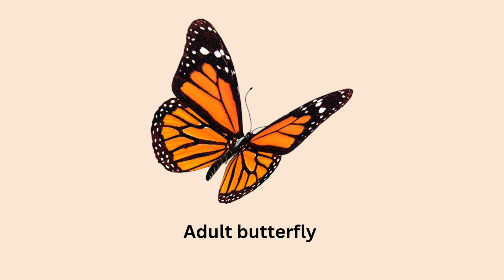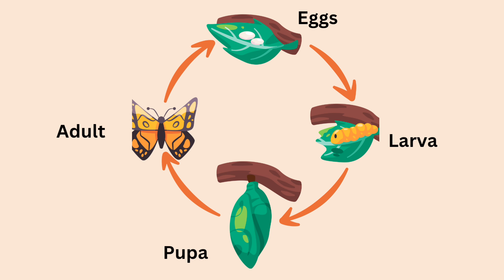Once a female lays its eggs, the life cycle starts all over again. The life cycle of a butterfly is summarized as seen on the screen: from egg, it changes to larva or caterpillar; from caterpillar, it changes to pupa; and then finally to the adult stage.